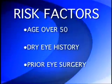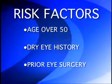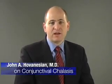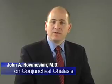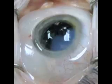Risk factors for conjunctival chalasis include age over 50, dry eye history, and prior eye surgery, particularly where there is a history of a peribulbar or a retrobulbar anesthetic that was used. Some have theorized that the use of peribulbar or retrobulbar anesthetic causes conjunctival swelling or chemosis, and this may lead to loosening of the tethering tenon's fascia between the eyeball and the conjunctiva.